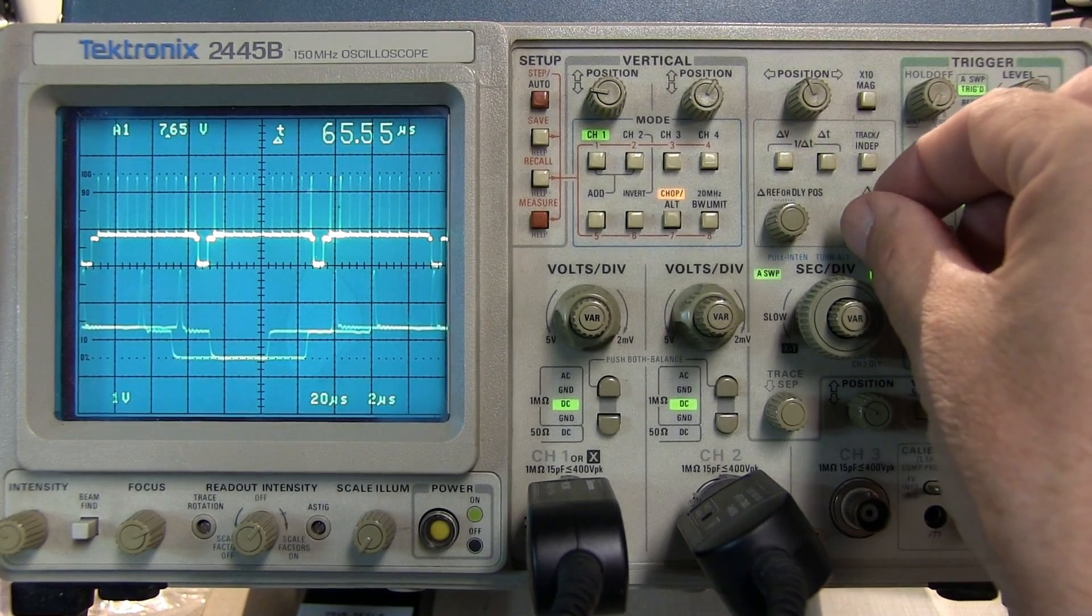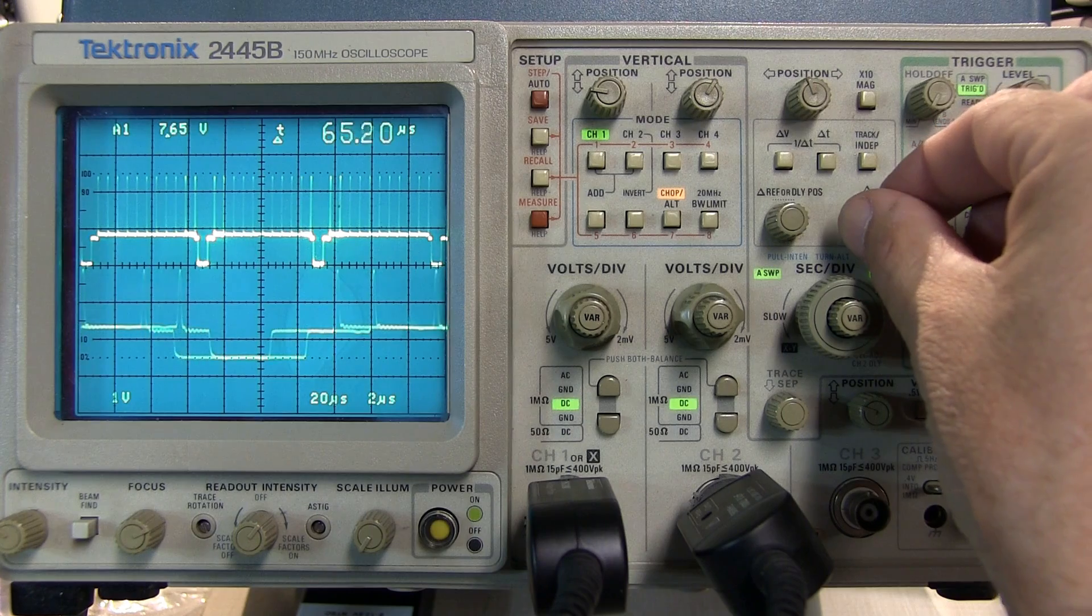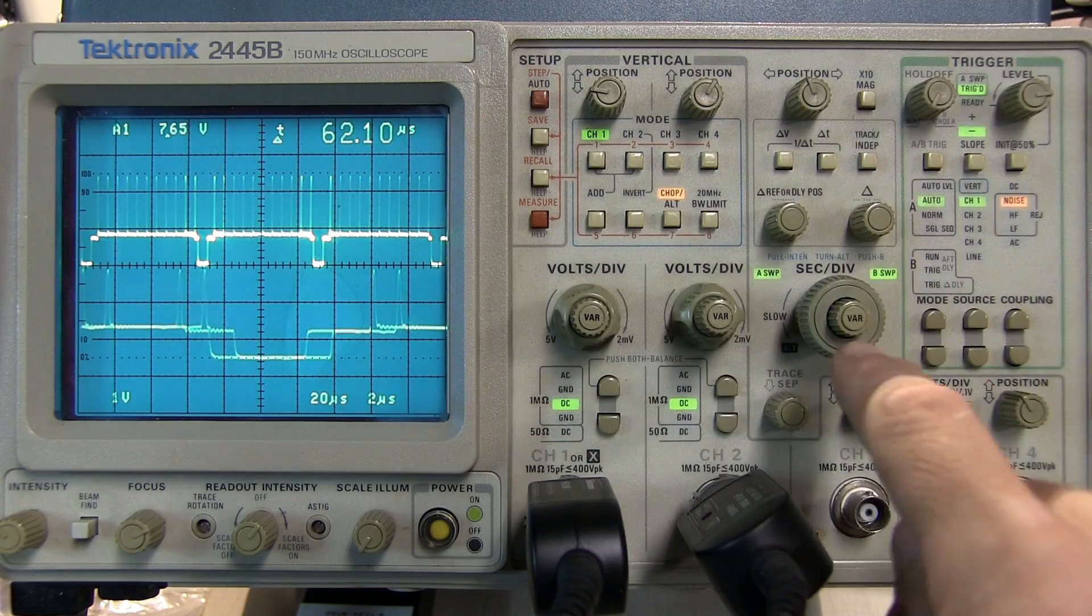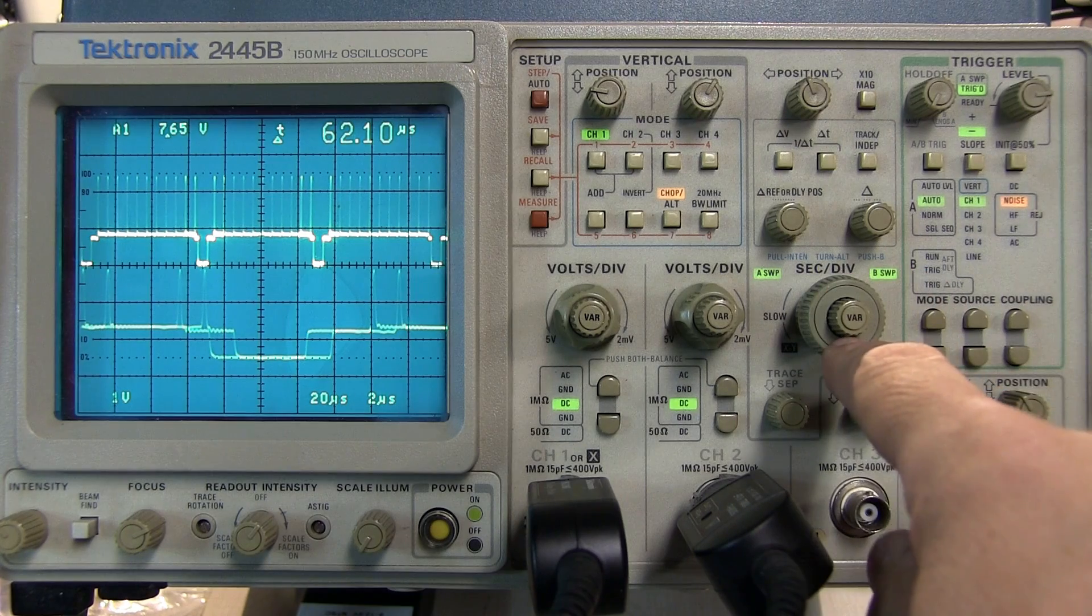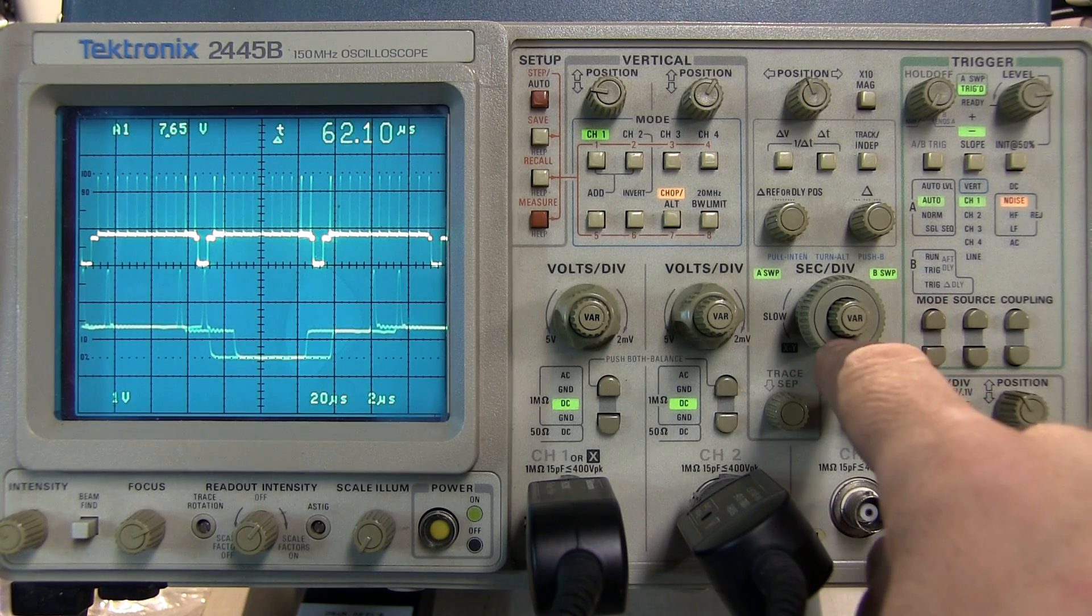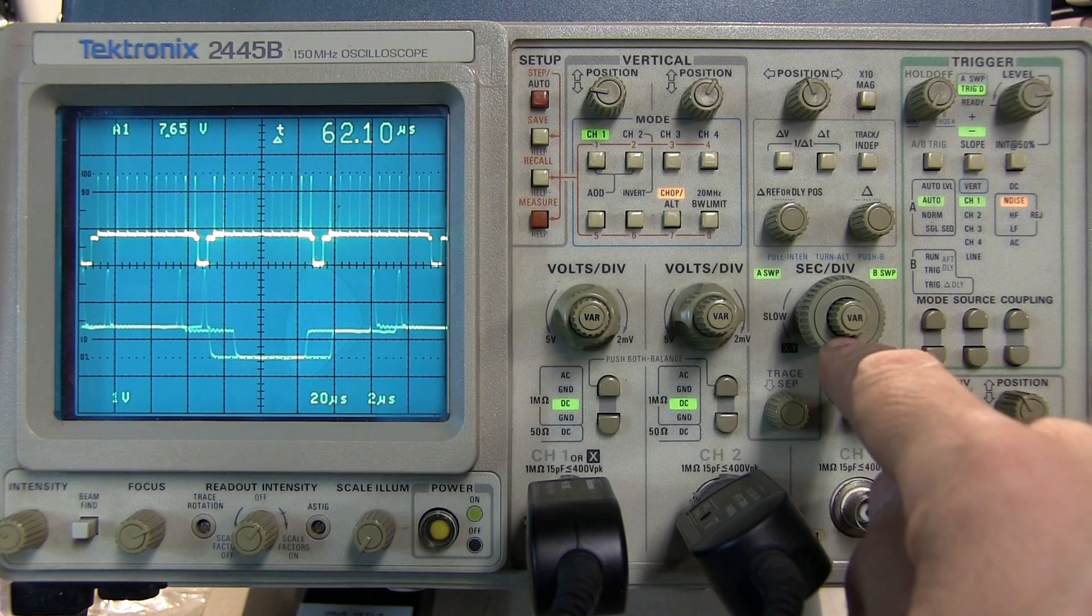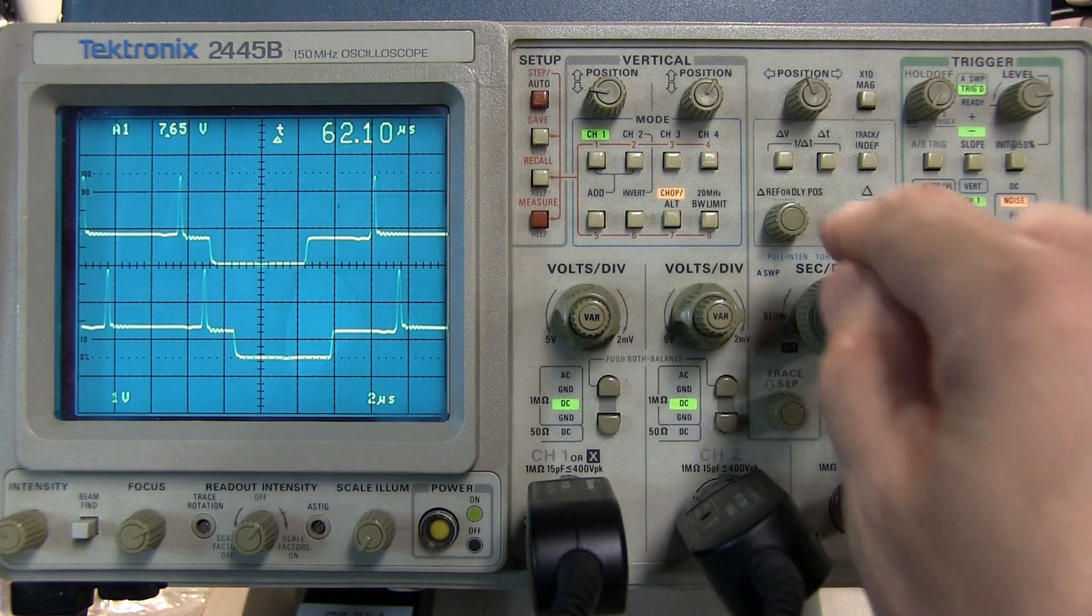Now of course these waveforms are laying on top of each other. I can't separate those and still have the main time base available. However if I now simply push in the seconds per division knob that will turn off the A sweep and just leave me with the B sweep.